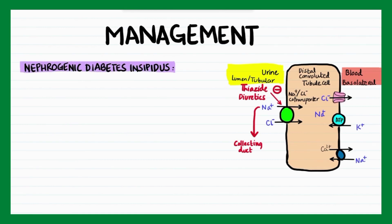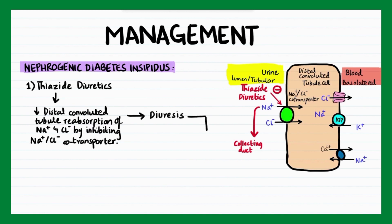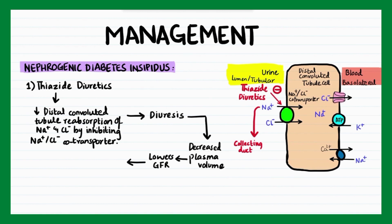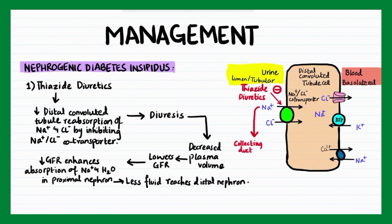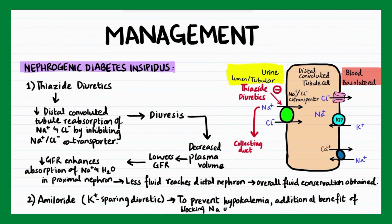For managing nephrogenic diabetes insipidus, thiazide diuretics are used, which reduce distal convoluted tubule reabsorption of sodium and chloride by blocking the sodium-chloride co-transporter. This promotes natriuresis and diuresis, leading to decreased plasma volume and low GFR. Low glomerular filtration rate enhances absorption of sodium and water in the proximal nephron, so less fluid reaches the distal nephron and overall fluid conservation is obtained. Amiloride, a potassium-sparing diuretic, is used in conjunction with thiazide diuretics to prevent hypokalemia and to block additional sodium uptake.